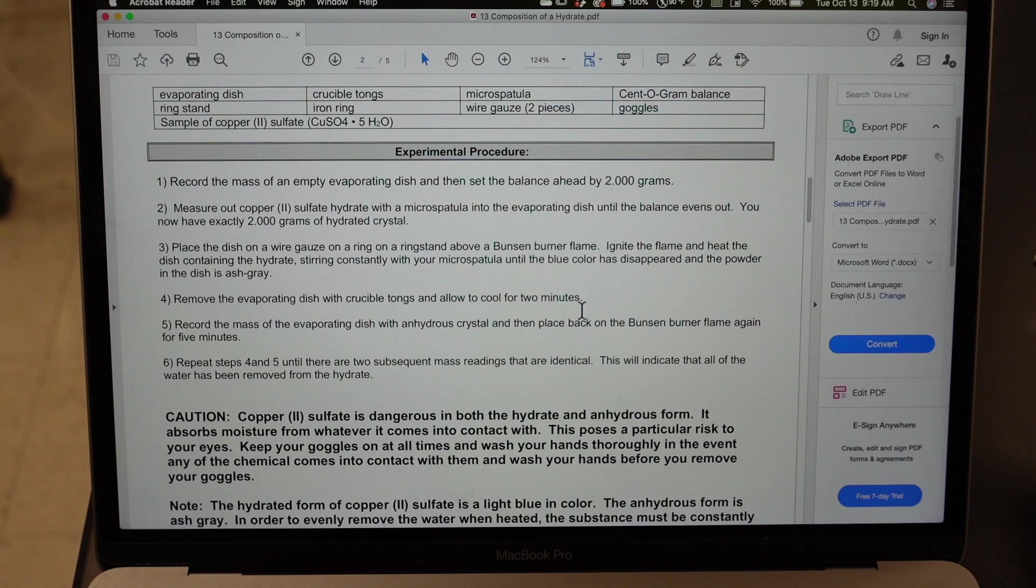Now we want to make sure all the water is gone. So we're going to remove the dish and allow it to cool for 2 minutes. Then we're going to record the mass of the dish and then we're going to place it back on the Bunsen burner flame and we're going to heat it and re-weigh it until we get two masses that are identical. Because each time if we heat it and the mass goes down that means there was still a little water. Two readings that are the same mean there was no more water left to draw off.